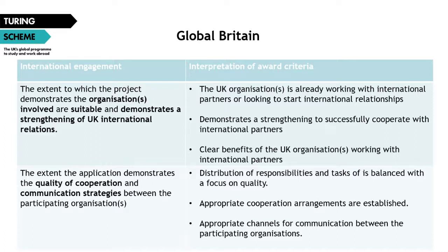Include as much detail as possible about already formed international partnerships, how you chose particular partners, and what you're working towards together. You must link your joint objectives to those of the Turing Scheme. If you've not yet formed international partnerships, detail the steps you plan to gain long-lasting and beneficial relationships abroad — for example, will you sign up to a partner-finding tool or could anyone within your network facilitate finding a partner? The application should also demonstrate clear benefits of the UK organization working with the proposed international partners, with clear reasoning for the countries involved, and the proposed activities should have greater potential value than similar training offered in the UK.